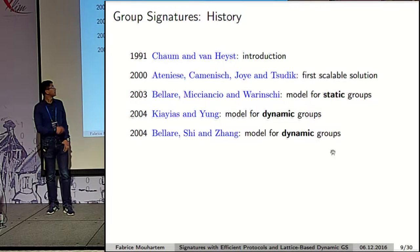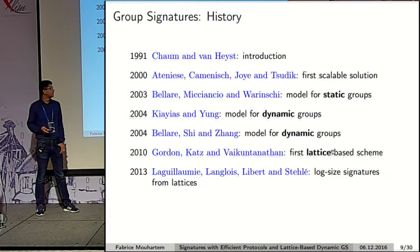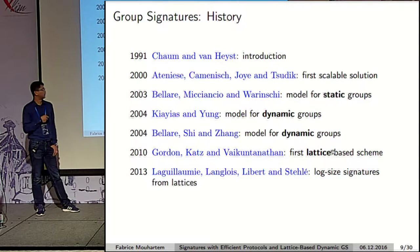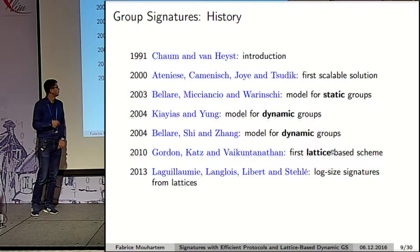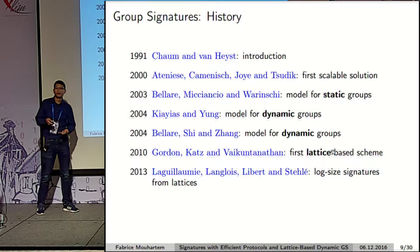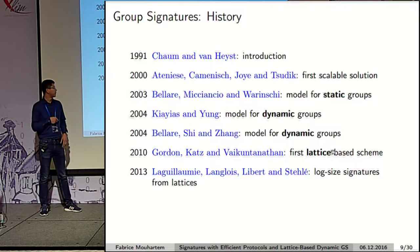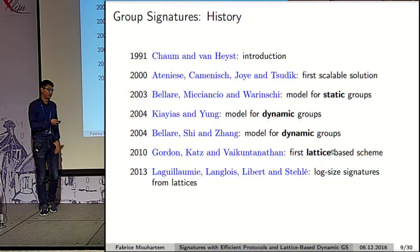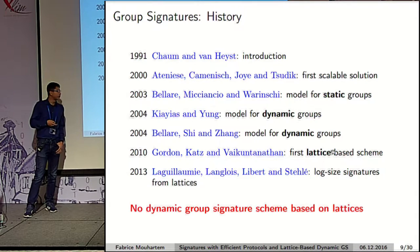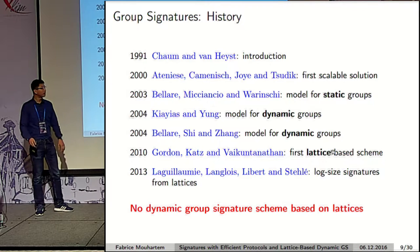For the dynamic setting, one year later, Kiayias-Yung and Bellare-Shi-Zhang proposed at the same time two different models, which are equivalent up to some details. For the lattice setting, the first construction is from 2010 — ten years after the first construction based on other assumptions. That scheme has the problem that the signature size grows linearly with the number of users, which is undesirable. In 2014, we had the first logarithmic-size signature from lattices. Both of these schemes are for static groups, so there are no dynamic group signature schemes based on lattices, and we aimed at filling this gap.